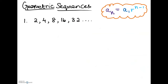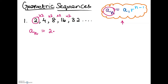For our first question we have the sequence 2, 4, 8, 16, 32. It's a geometric sequence because we're multiplying a certain value onto each number. Let's try to find the equation for the nth term by substituting all our values into the formula. a of n equals a of 1, which is 2, times r to the power of n minus 1. r is 2 because that's what we're multiplying by each term. We leave it as n minus 1 because we're writing a general equation, not solving for any particular term.